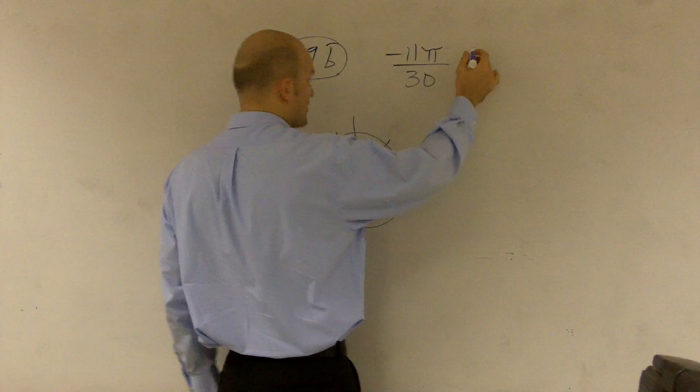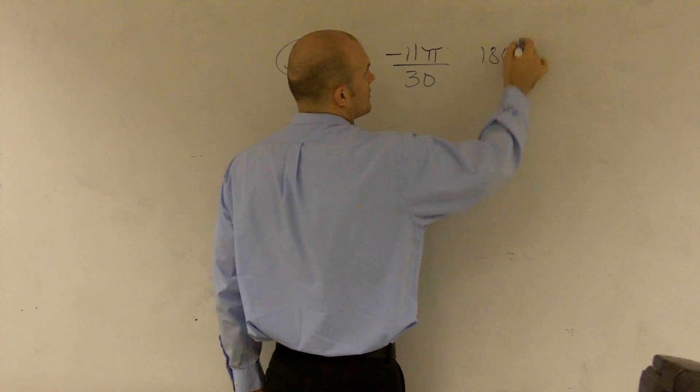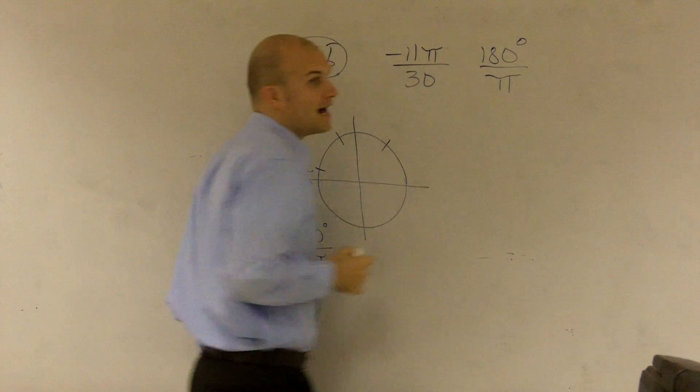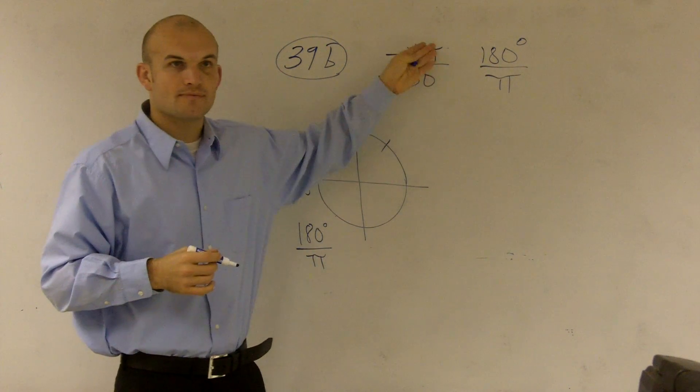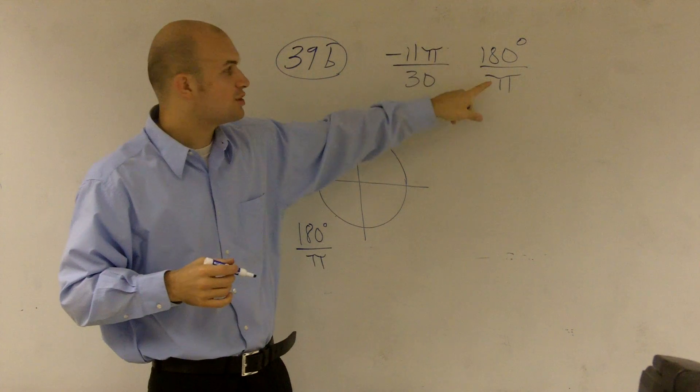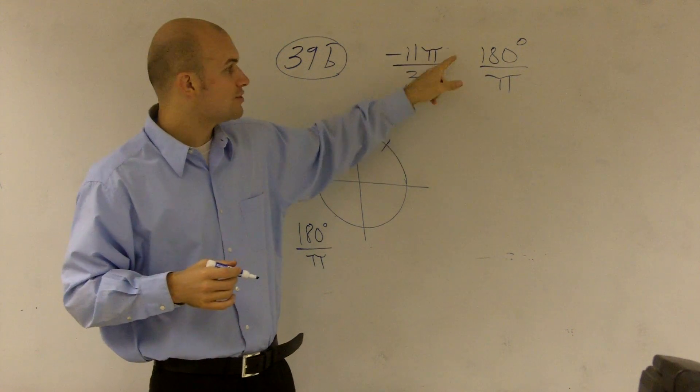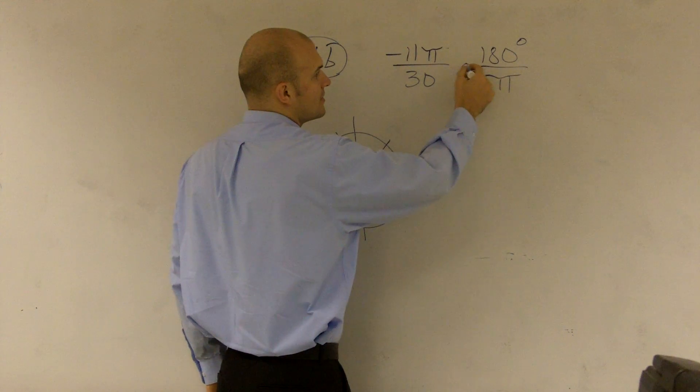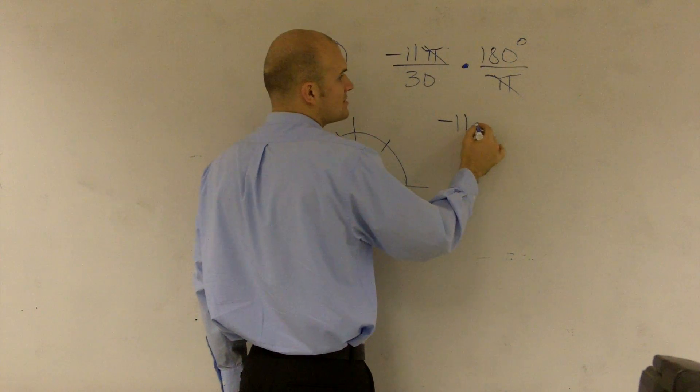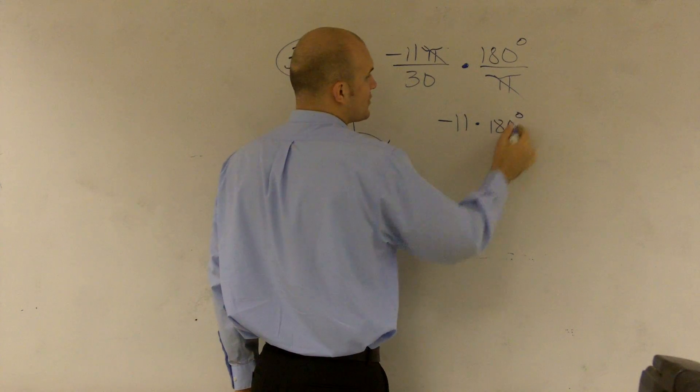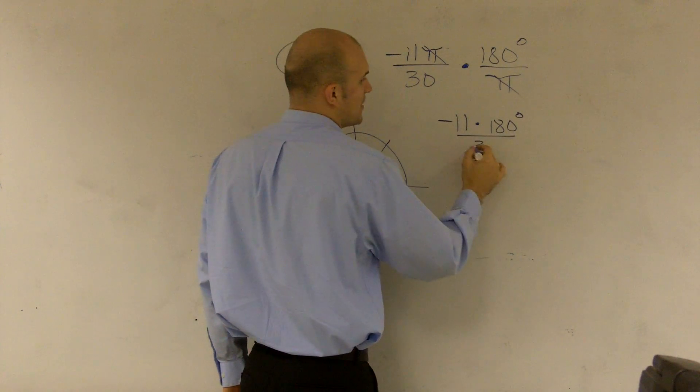And the reason why I want to write it like that is because now I have a pi divided by pi, so I'm going to cancel out the pi's. 180 degrees is equivalent to pi radians. So if you write it like this, you multiply them. Then what happens is I can cancel out my pi's, so I have negative 11 times 180 degrees divided by 30.